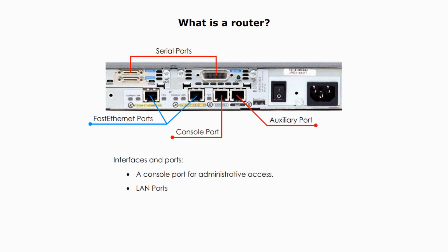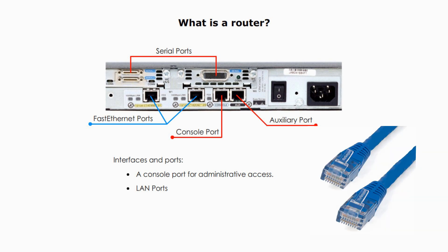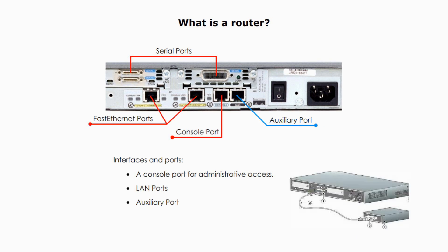This router has two Ethernet network ports — they are LAN ports. They can be connected to a switch or computer using an RJ45 connector and straight-through cables. The auxiliary port is commonly used as a dial-up port for remote router management. It's connected to a modem and enables administrators to make a phone call to connect to the router. It's like a remote console port.